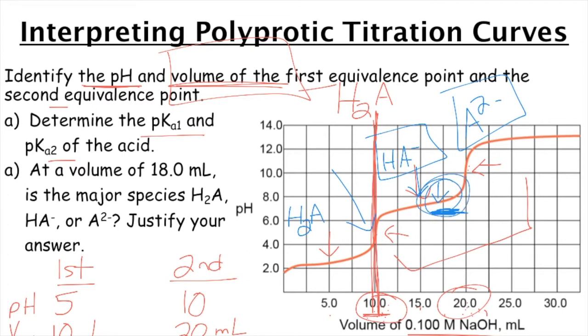We are a little past half equivalence. So what that tells us is that we have a little bit more of the conjugate base than the acid. So A2 minus is the dominant species there.